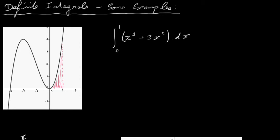In this video I'm going to have a look at doing some definite integrals — two or three examples of how you would actually work them out. The first one is x cubed plus 3x squared, integrated between 0 and 1. It's a cubic function, and we're going to look at the area under the curve between x equals 0 and x equals 1. That's what a definite integral does — it finds the area underneath these curves. I've shaded in the area we're looking for.